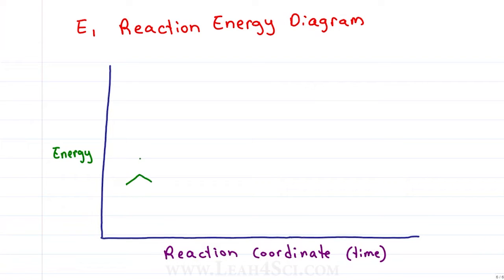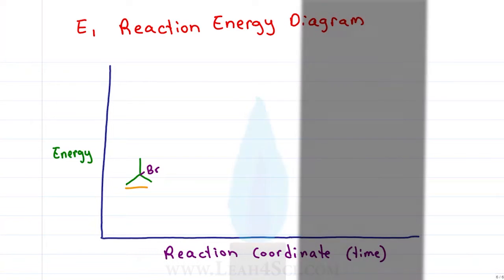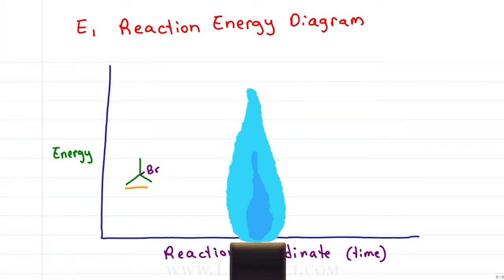The reaction begins with our starting molecule, 2-bromo-2-methylpropane just sitting there minding its own business at a relatively low energy. It's a stable molecule. But when this molecule is given an input of energy which we saw as heat, the energy of the system begins to go up and up and up until there's so much energy that the bromine, the leaving group starts to break away.